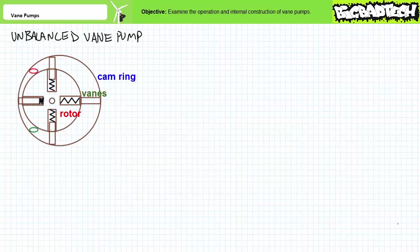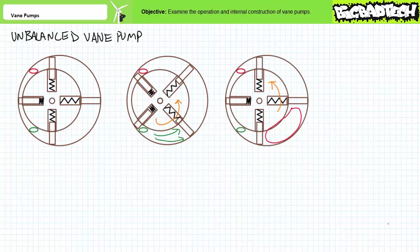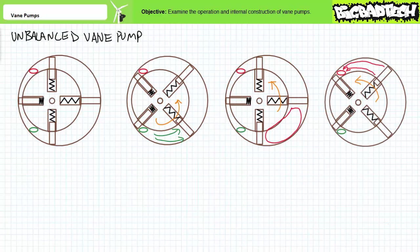Some vane pumps passively rely on centrifugal force to sling the vanes outwards, whereas others have springs that actively do so. Given the rotor is mounted off-center, and the green bottom port serves as an input and the red top port serves as an output, consider how an unbalanced vane pump executes the stages of a positive displacement pump. As the rotor rotates counter-clockwise, the inlet port sees a region of increasing volume. This half performs the suction phase. The extended vanes serve to provide a clear and definite separation between the inlet and outlet ports. Oil trapped between the vanes and cam ring is brought around to the outlet port and deposited in a region of decreasing volume, performing the compression and exhaust phase.